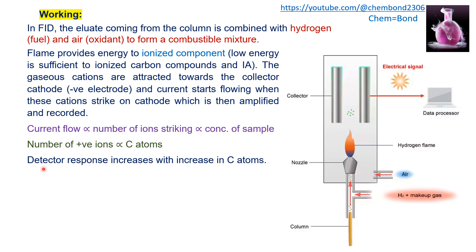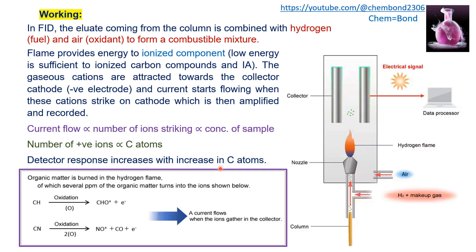The detector response increases with an increase in carbon atoms. The organic matter is burned in the hydrogen flame, and several ppm of organic matter is burned into ions. For a hydrocarbon mixture, combustion produces cations and electrons. For carbon-containing nitrogen compounds, combustion produces cations, carbon monoxide, and electrons. These cations move towards the collector electrode and are amplified.